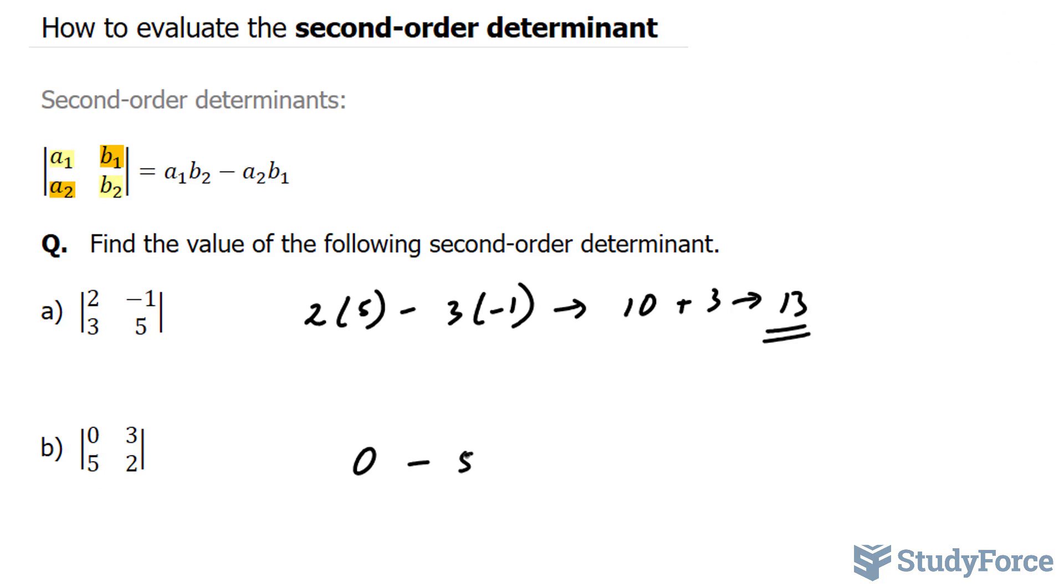5 times 3 gives us negative 15. So our final answer here is negative 15.